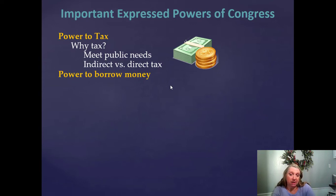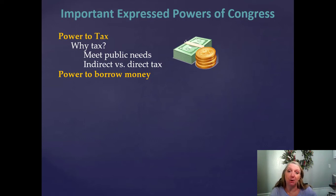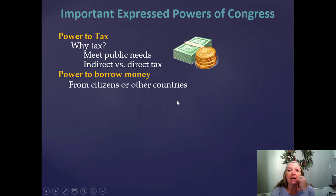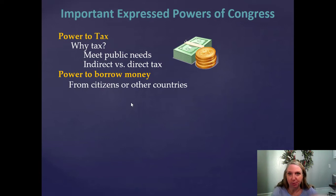Congress also has the power to borrow money. Sometimes we spend more than we bring in — and many times now, we know in advance we're going to spend more than we bring in. Sometimes a major national event like a war means we need to borrow money to cover those costs. The federal government borrows from citizens or other countries like China and Japan, but most of the United States debt is actually owed to US citizens — money we've essentially borrowed from ourselves.